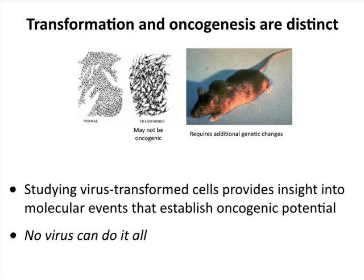We study virus-induced tumors because viruses can be quite simple — you have X number of genes and can figure out which viral genes are involved in transforming cells and giving them some oncogenic potential. We don't say viruses directly cause cancer because they can't do everything alone. Viruses are associated with cancers because they will transform cells, but the rest of the steps from transformed cells to tumor happen in us as the cells multiply. When cells divide forever, they accumulate mutations, and that's one way they can become oncogenic.